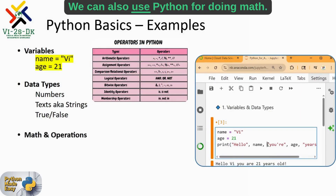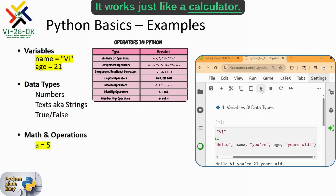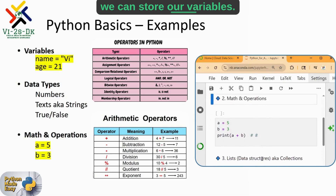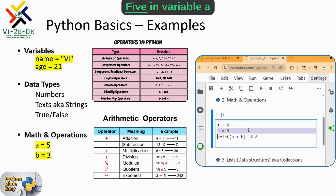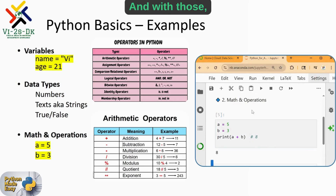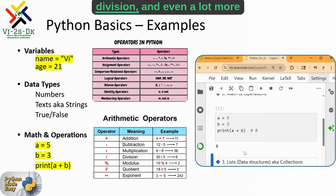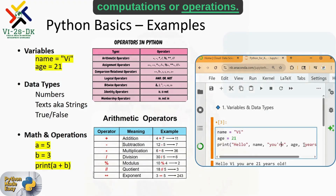We can also use Python for doing math — it works just like a calculator. We store our variables, in this case integers: 5 in variable A and 3 in variable B. With those, we can perform addition, subtraction, multiplication, division, and even more computations or operations.